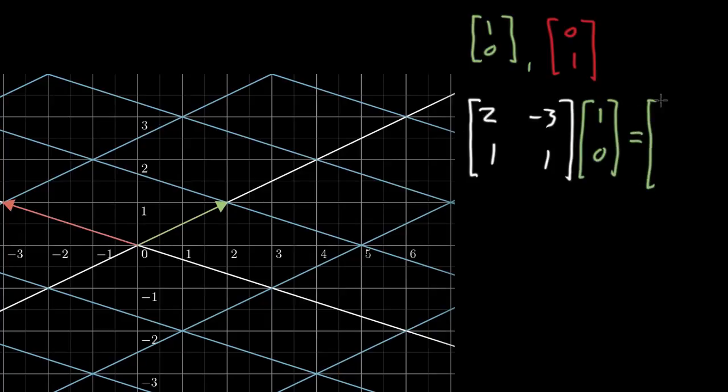so it's 2 times 1, that'll be 2, and then negative 3 times 0, so that'll just be 0. And over here, it's 1 times 1, so that's 1, and then 1 times 0. So again, we're adding 0. So the only terms that actually mattered because of this 0 down here was everything in that first column.